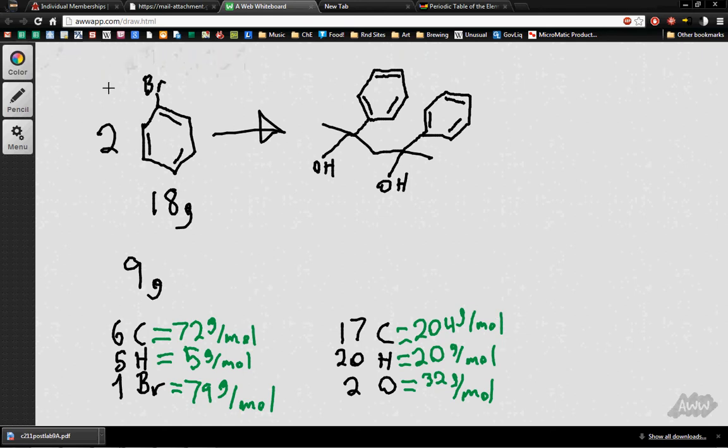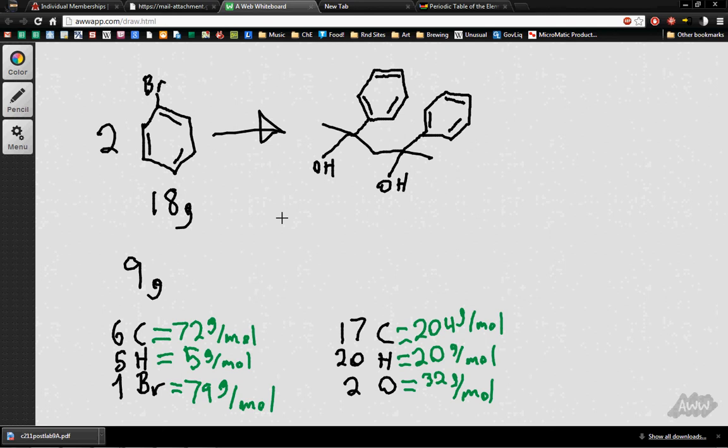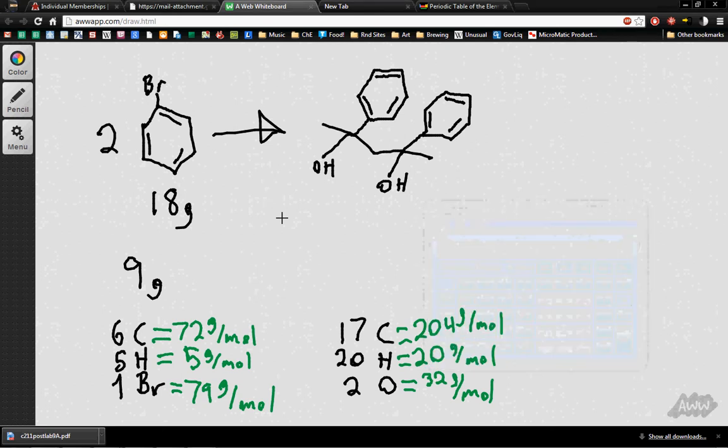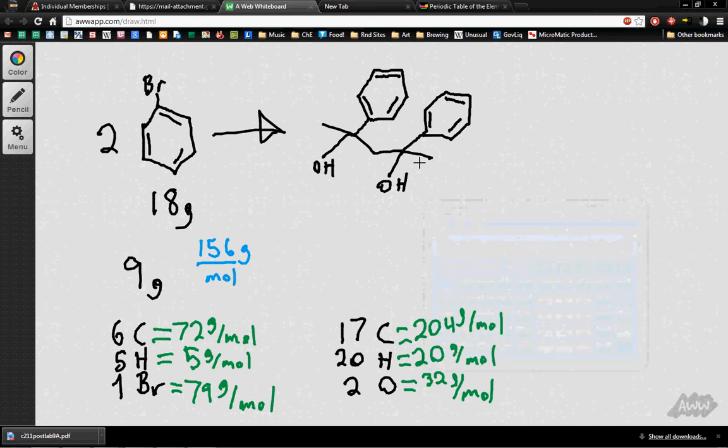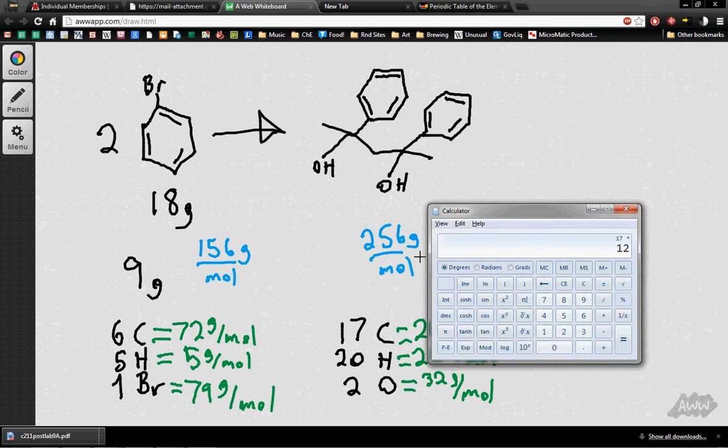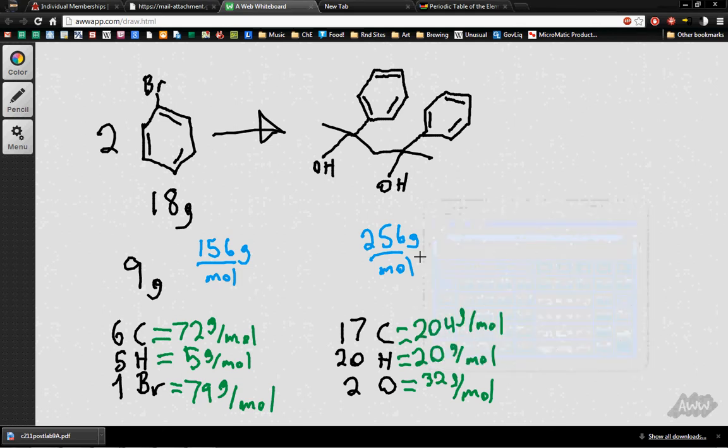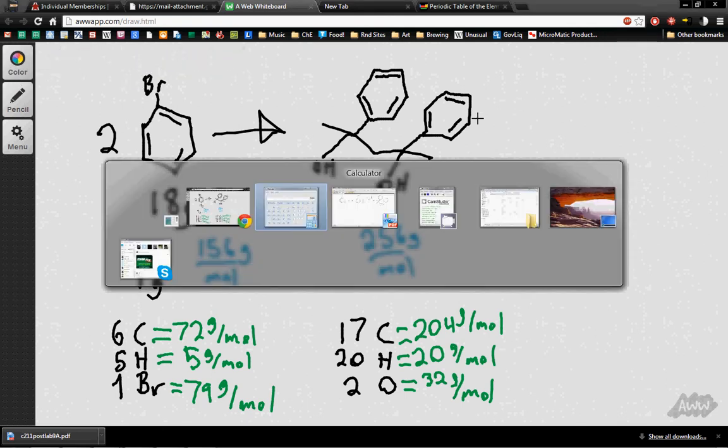Okay, so our total molecular mass for this guy is going to be 72 plus 5 plus 79, so 156 grams per mole. And for this other one, it's going to be 204 plus 20 plus 32, 256 grams per mole. Wait, did I do this correctly? 17 times 12, yeah, 204. Okay, all right, so we've got that, and oh, I guess the bromine weighs a lot, that's why they're closer than I expected them to be.